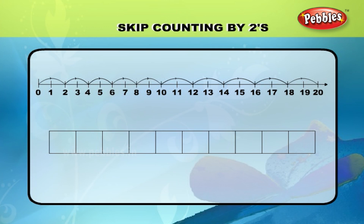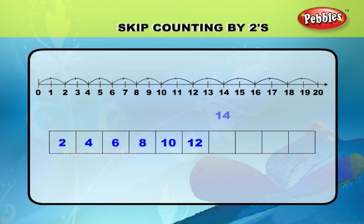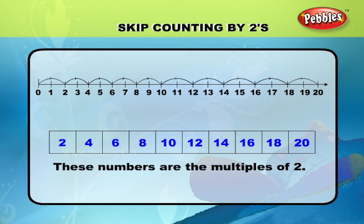Skip counting by twos. In the given number line, we have 20 numbers. Starting from zero, if you skip one number and jump to the next, we get 2, 4, 6, 8, 10, 12, 14, 16, 18, and 20. These numbers are the multiples of two.